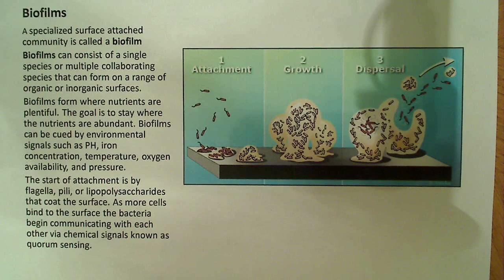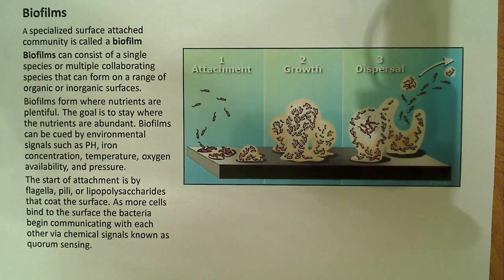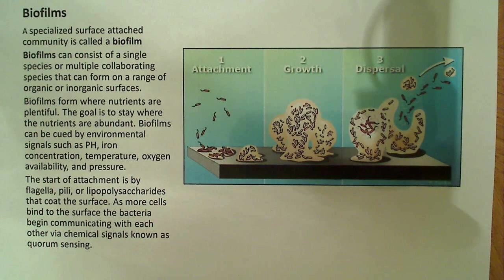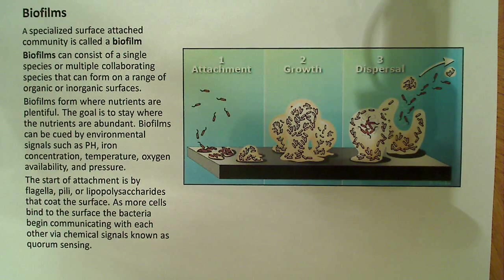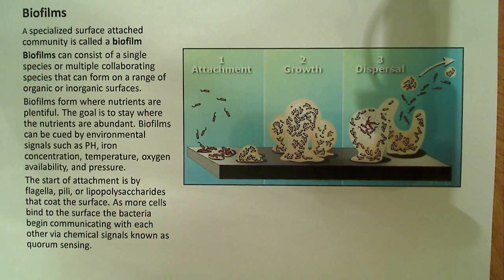They grow and develop into a specialized three-dimensional structure, and they actually have the ability to communicate with each other. Bacteria have this unique ability called quorum sensing. They're able to communicate with each other — not only members of the same species, but also members of different species — using chemical signals. These signals convey information, such as how many bacteria are in the community. A bacterium in a biofilm gets that sense through quorum sensing, by releasing what's called an auto-inducer into the environment.